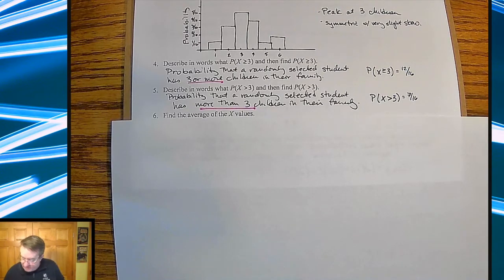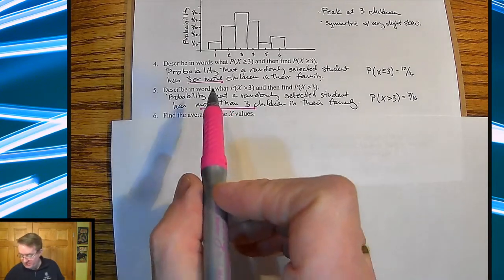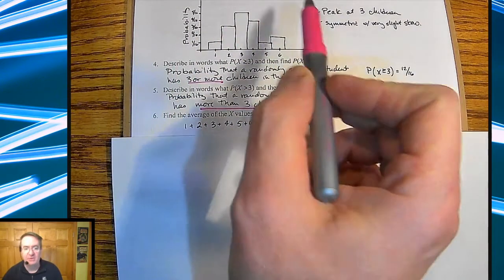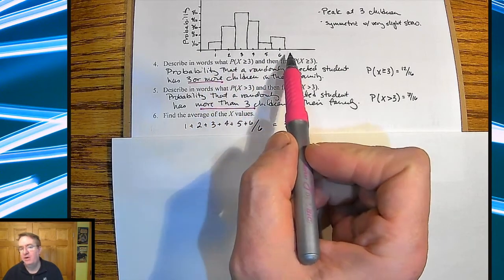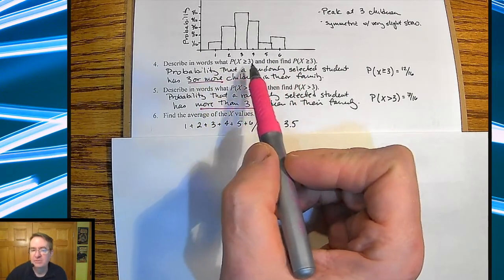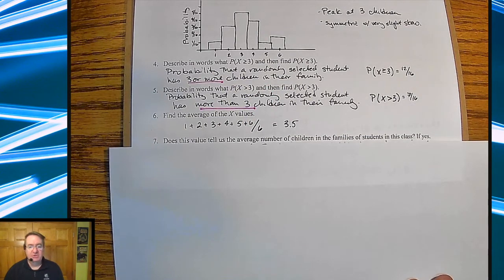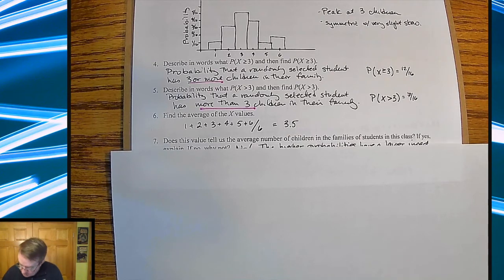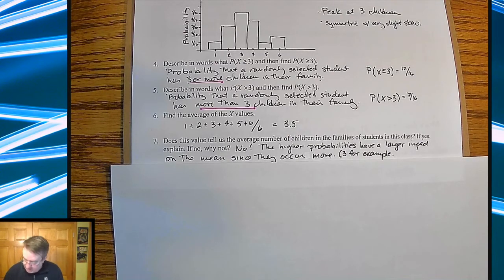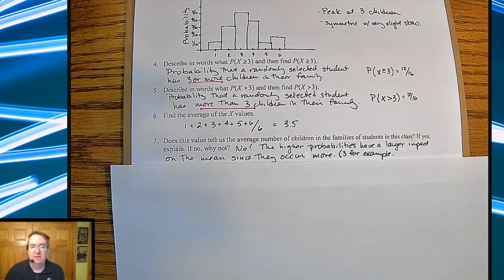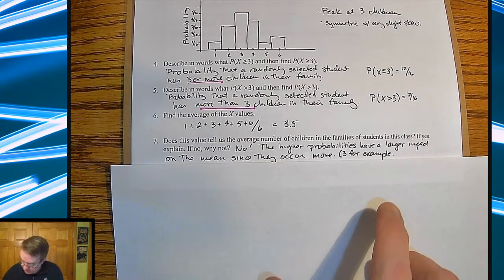Now, to find the average of the X values, students would just add up one through six and find that average and get 3.5. Why are we looking for that? Because we kind of want to know what the average of our data is — wouldn't we just add up all the different values of the data, one through six, and go from there? Well, the problem with that is: does that value tell us the average number of children in the families in this class? No, because the higher probabilities have a larger impact on the mean. Kids will say, well, three happens the most, so that's going to have the biggest impact on the mean — which is obviously very true.